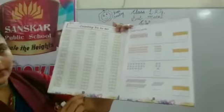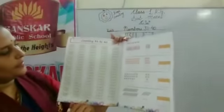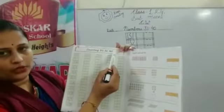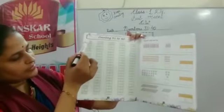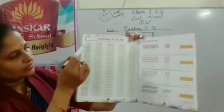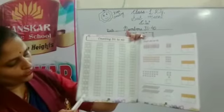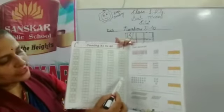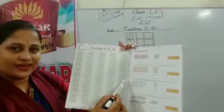Open it and take out page number 24. Can you see page number 24? The topic is counting 31 to 40. Aapko kya karna hai? First line yaha already mentioned hai 31 to 40. Yaha se aapko dekhkar 4 lines mein copy karna hai.